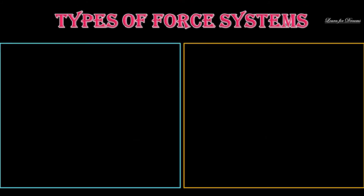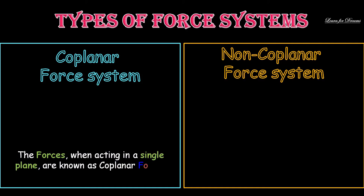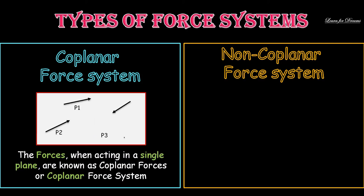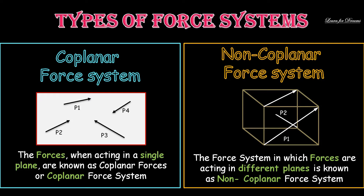Moving forward to the types of force systems, let's see the first two: coplanar force system and non-coplanar force system. The forces when acting in a single plane are known as coplanar force system. Here in this diagram you can easily understand that all the forces are in a single plane. In a non-coplanar force system, forces are acting in different planes. Here in this diagram you can see that all four forces P1, P2, P3 and P4 are acting in different planes.